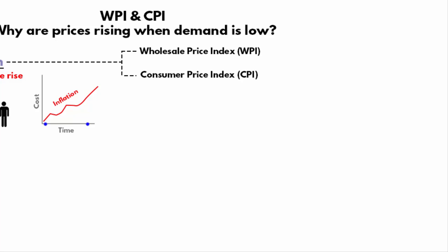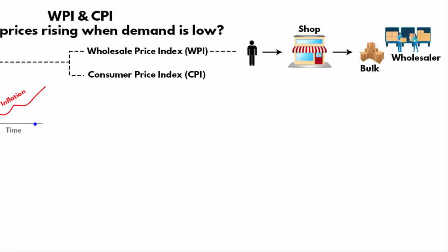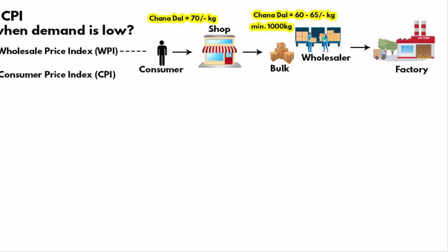WPI measures the changes in the prices of goods sold and traded in bulk by wholesale businesses to other businesses. When you go to a shop to buy any commodity, the shop owner buys that commodity in bulk from a wholesale business. The wholesaler buys products from manufacturers. For example, if you buy 1 kg of chana dal for 70 rupees, the shop owner buys it at Rs. 60-65 per kg but has to order a minimum quantity of 1000 kg. So there are two prices: one at the consumer level and the other at the wholesale level.